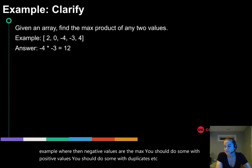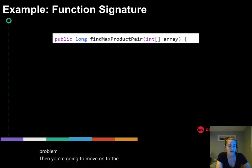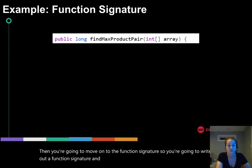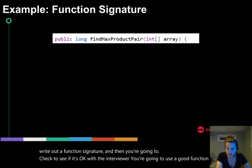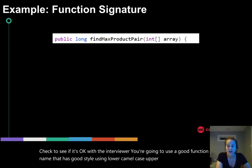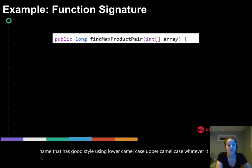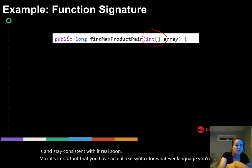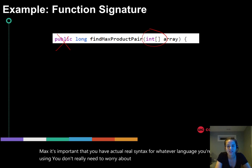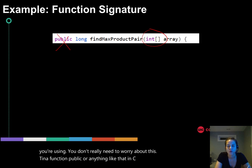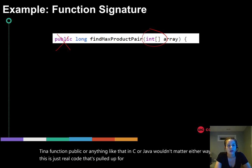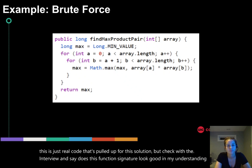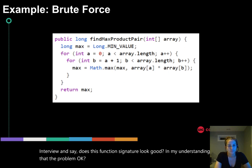Once you clarify the problem, move on to the function signature. Write it out using a good function name with consistent style — lower camelCase or upper CamelCase. Use real syntax for whatever language you're using. Then check with the interviewer: 'Does this function signature look good? Am I understanding the problem correctly?'